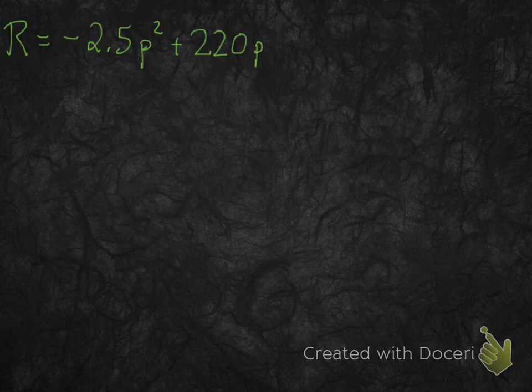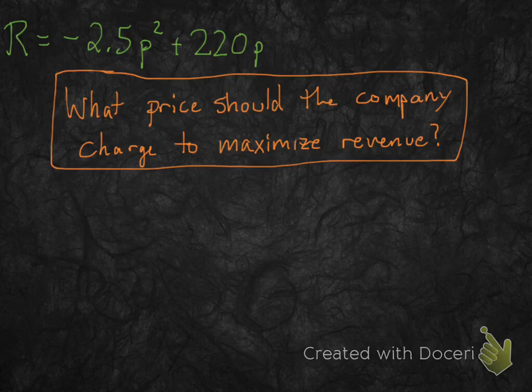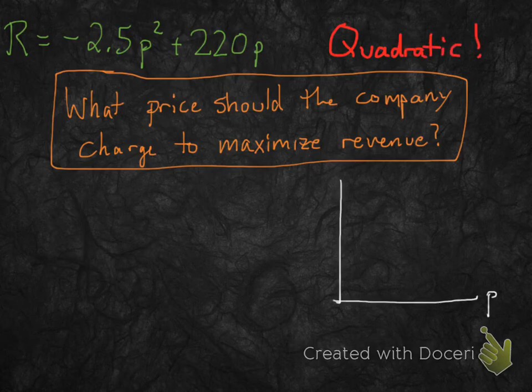So we have our revenue equation right here — a function that tells you what the revenue is based on what price we charge per ticket. Now, what price should we charge to maximize revenue? Well, what kind of function is this? It has a p squared term, so it's actually a quadratic.